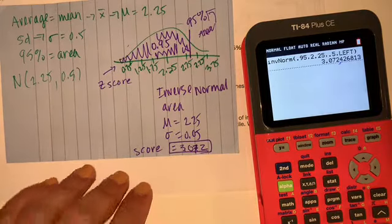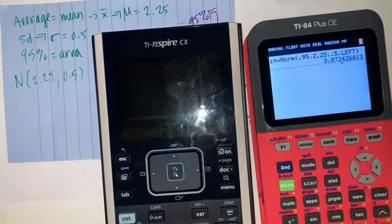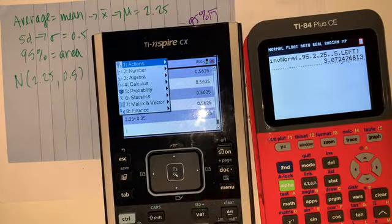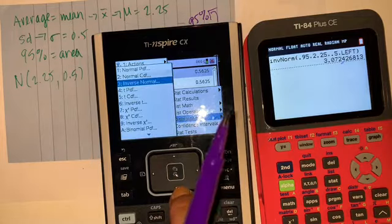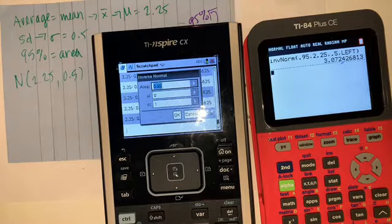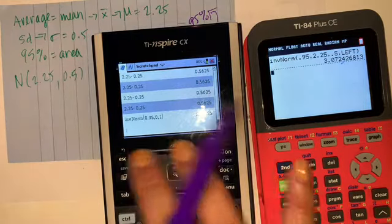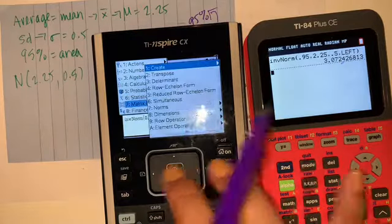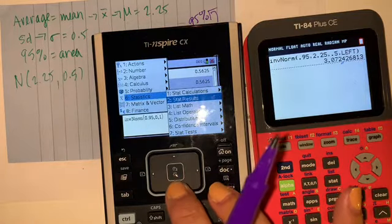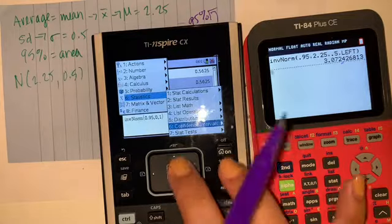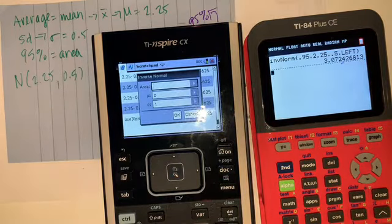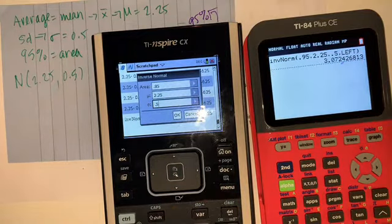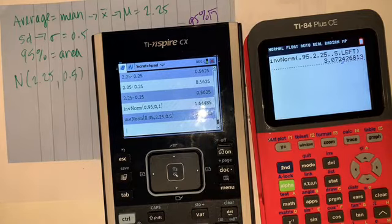So that's your score on the TI-84. On the Nspire: go to Menu, Statistics, Distributions, Inverse Normal. The area is going to be 0.95, your mu is 2.25, and your standard deviation is 0.5. I had the wrong standard deviation before, that's why the answer was wrong. Press enter and there's your score: 3.07243, or rounded to the hundredths place, 3.07.